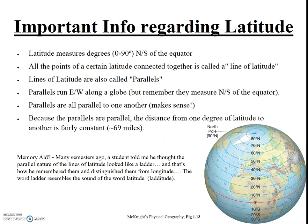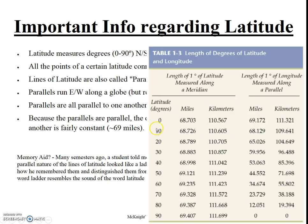Pause the video here and review these very important concepts regarding latitude. Because the parallels are parallel, the distance from one degree of latitude to the next is fairly constant all over the Earth — roughly 69 miles. One degree of latitude wherever you are on Earth is approximately 69 miles. The same thing cannot be said for longitude, and we're going to look at that shortly.